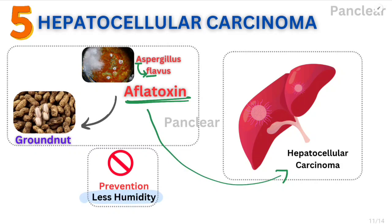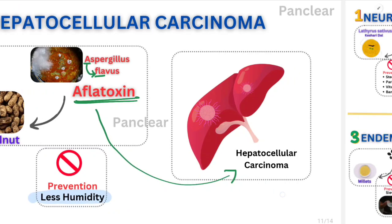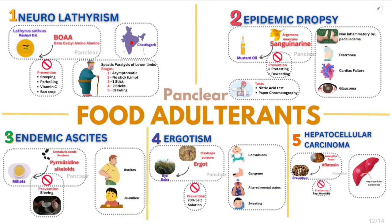Now let's summarize the five adulteration diseases. You can see a screenshot here. First, neurolathyrism: caused by lathyrus sativus dal, toxin is BOAA — beta-oxalyl-amino-alanine — causes spastic paralysis of lower limb in five stages. Prevention: steeping, parboiling, vitamin C, and banning the crop. Most commonly seen in Chhattisgarh.